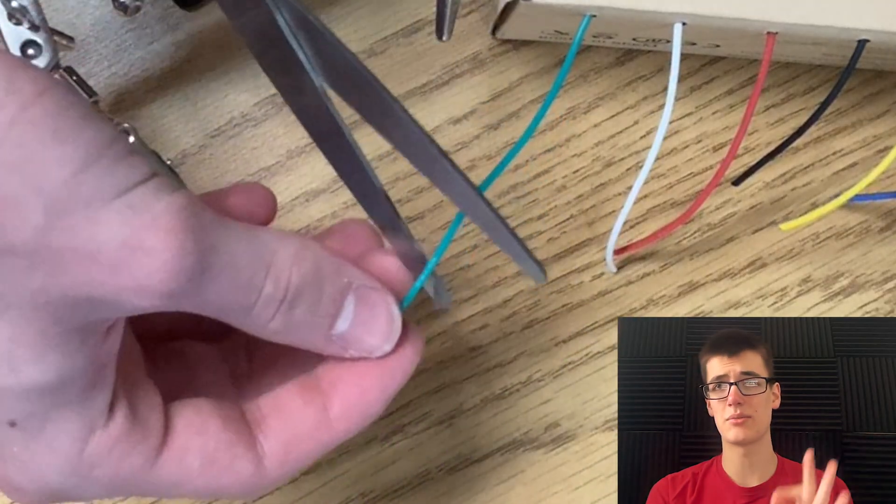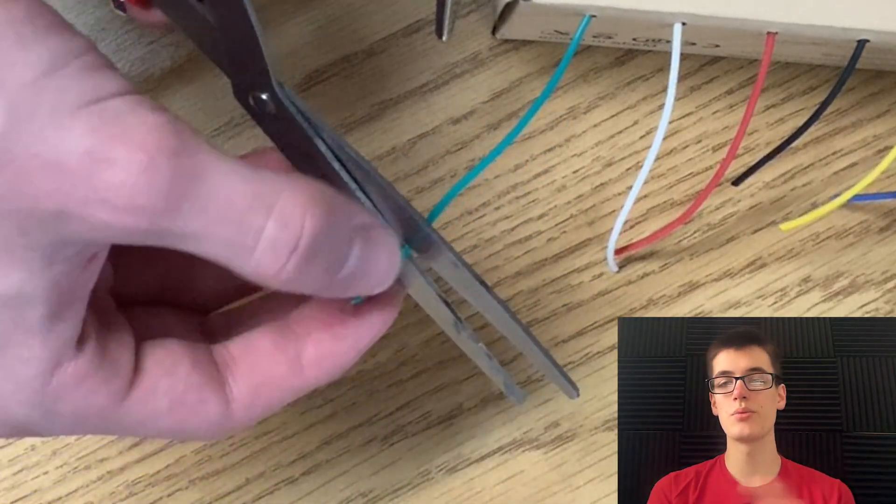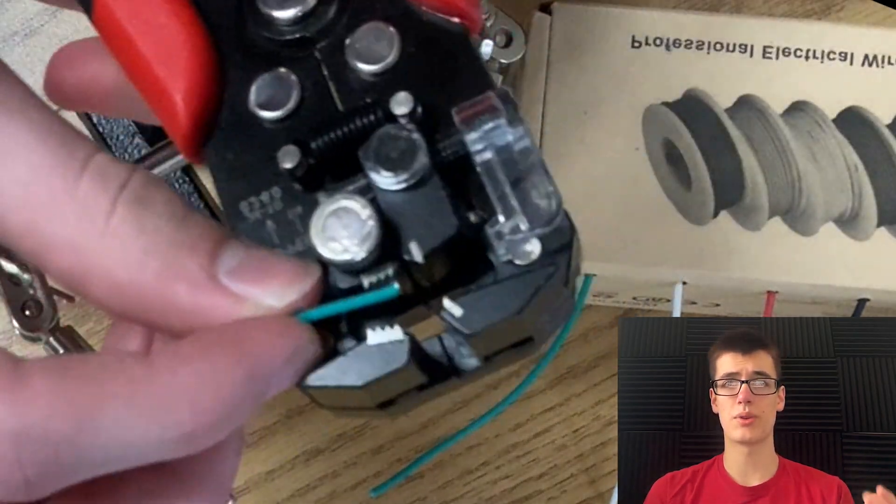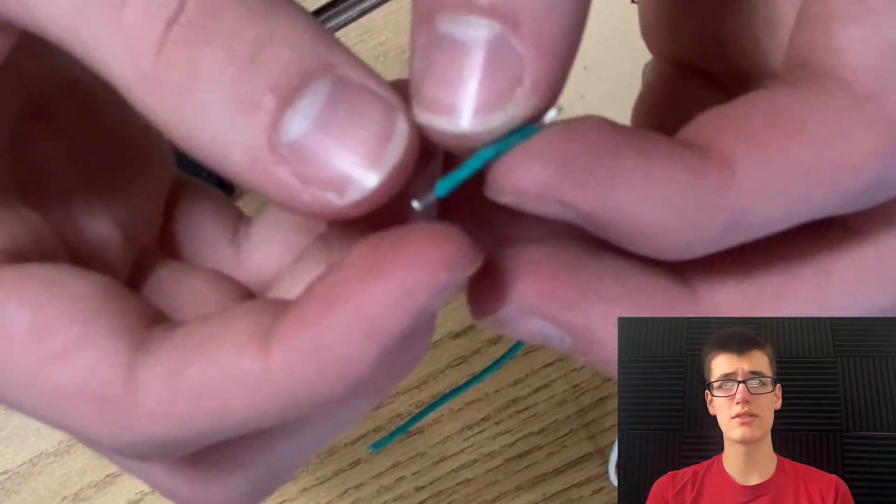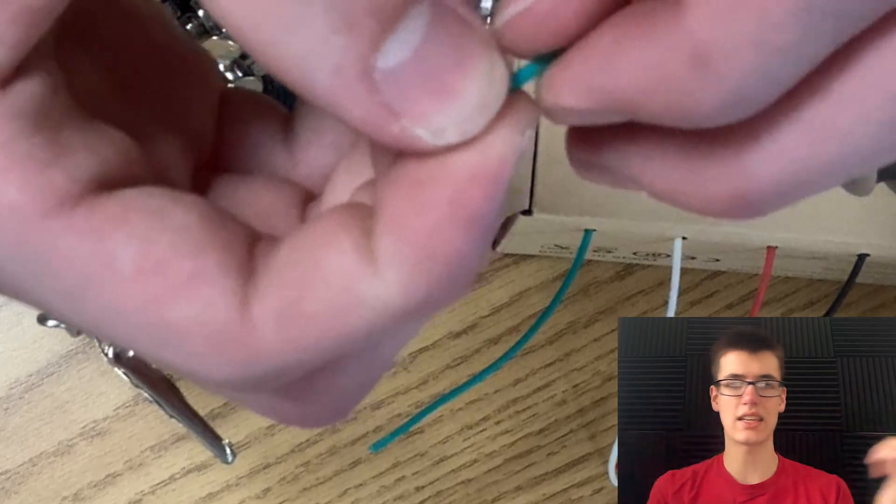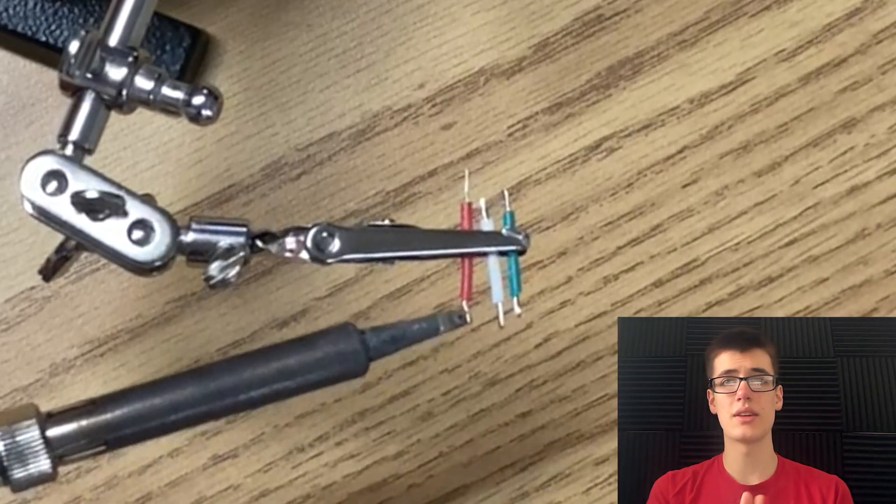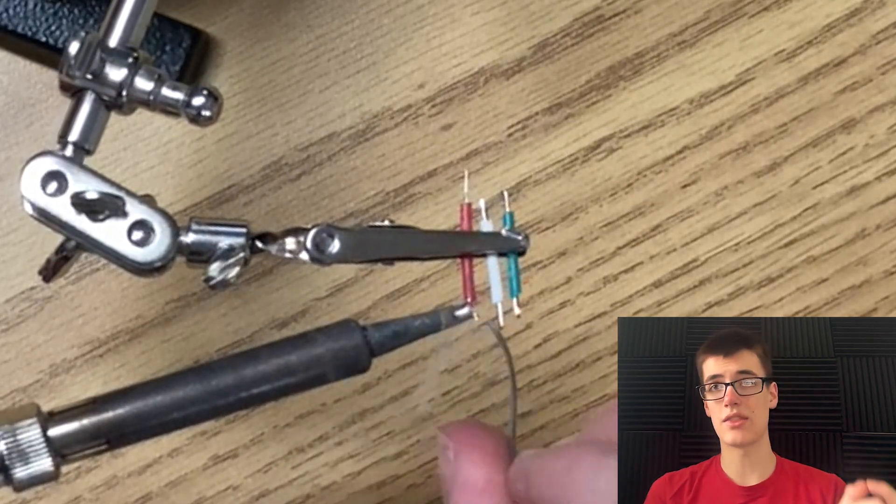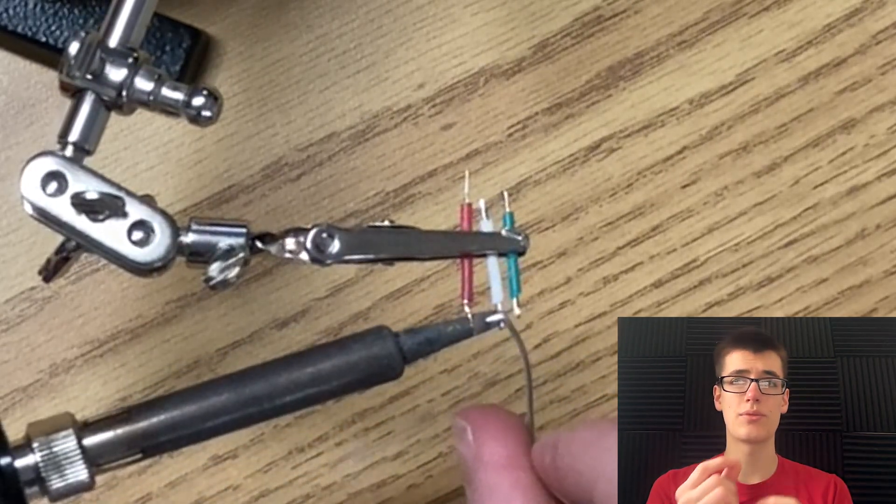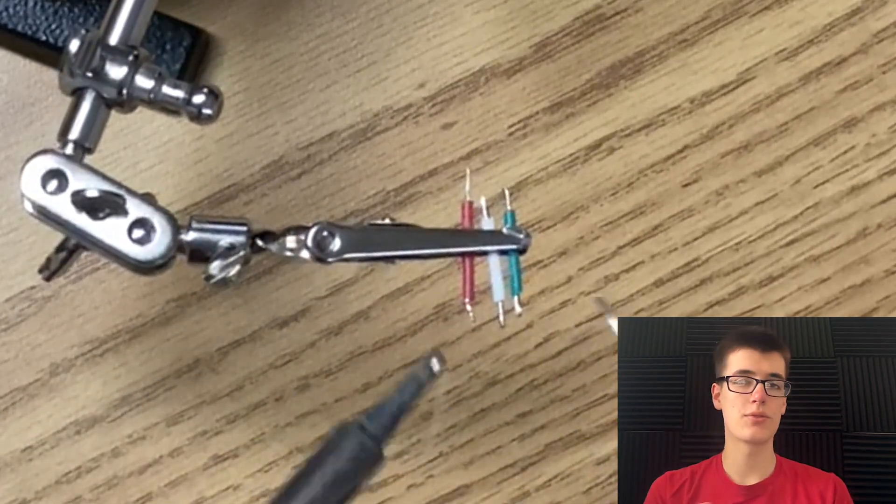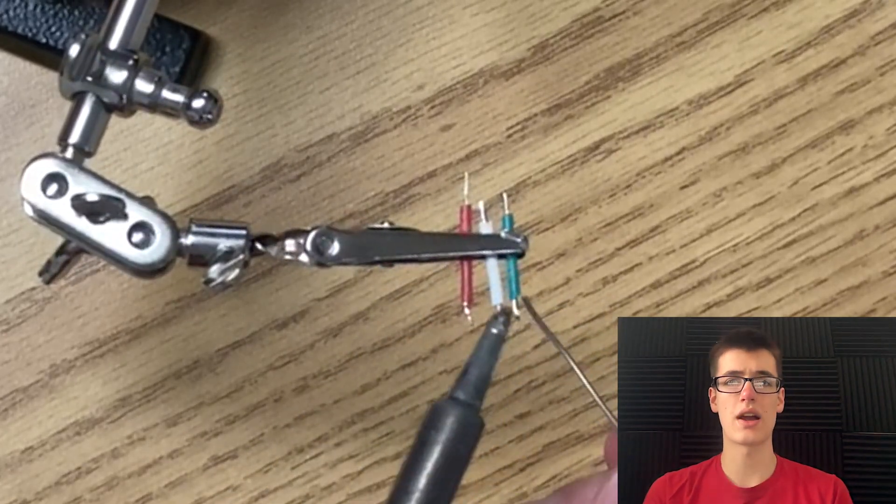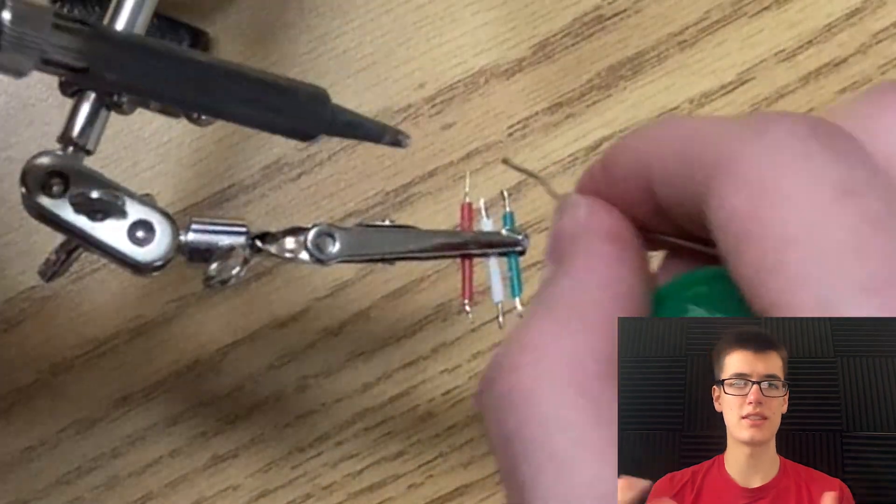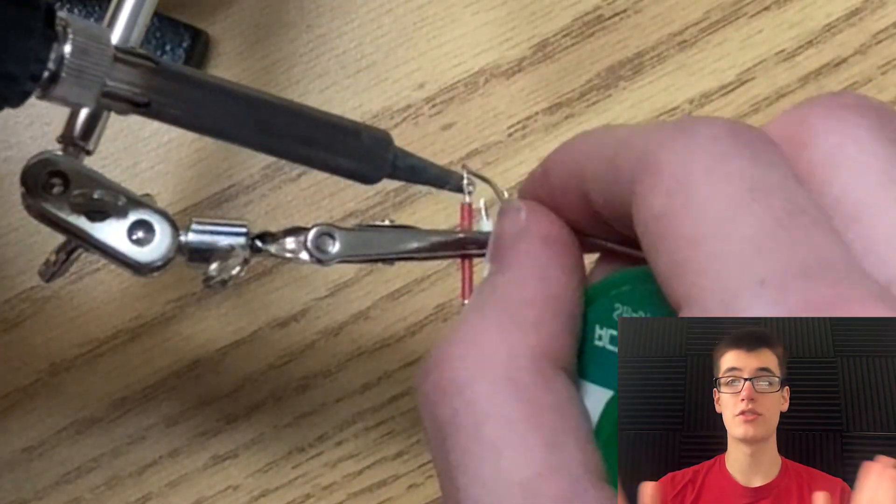And once those pads are tinned, I also want to tin the wires themselves, which will make it again, just super easy to do this soldering job. So I'll cut some super short wires, strip both ends, and then twist up the ends so the copper strands aren't just sticking out every which way. Then I'll do the same thing that we did for the pads, touching the iron to the wire to let it heat up, then bringing in the solder and letting it flow and spread over the wire. Of course, we'll do this for all three wires and both ends of all three wires. And once we're done, you'll see how doing all of this tinning will make our soldering job super easy.